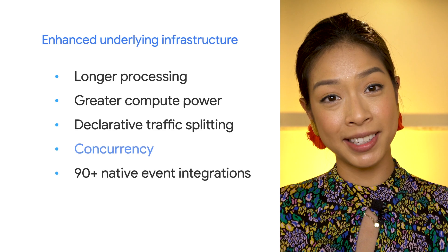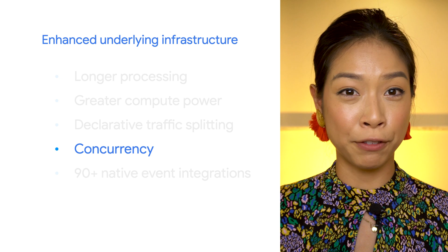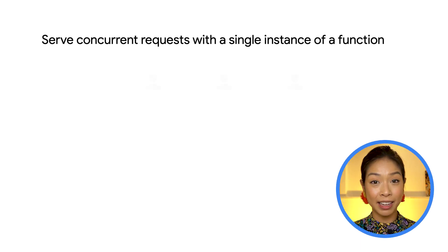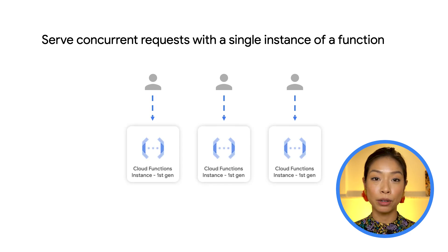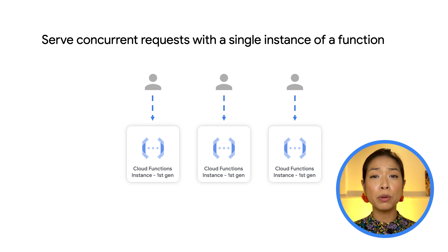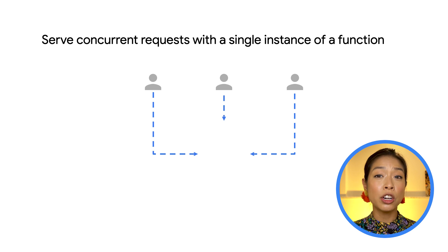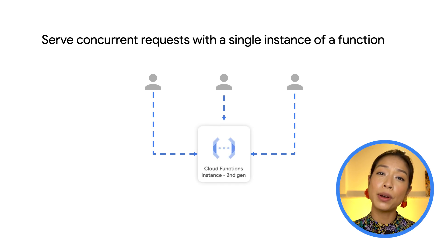Let's cover one more feature from the new underlying infrastructure in Second Gen: concurrency. Previously in Cloud Functions, each instance of your code would handle a single request, meaning that as more requests came in, the more compute your function used. In Cloud Functions Second Gen, however, you're now able to define concurrency — having one instance of your code handle multiple requests at the same time.